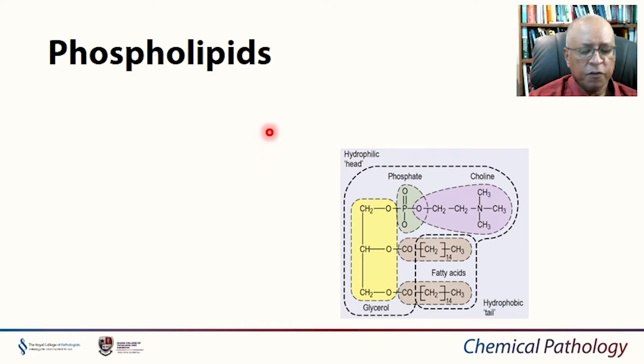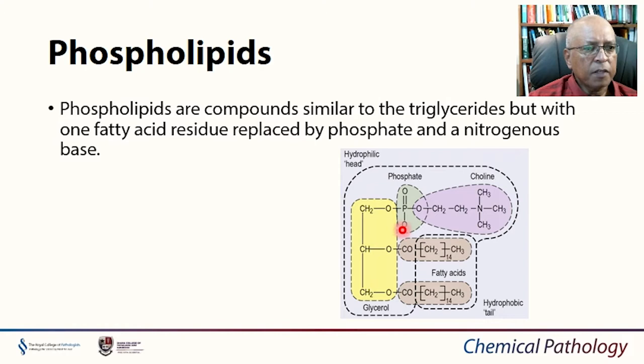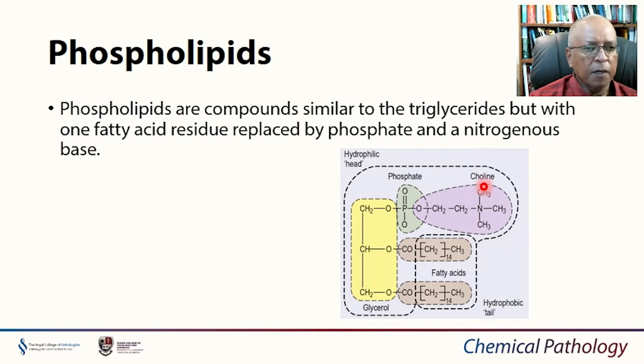Phospholipids are very similar to triglycerides. Looking at the structure, you can see the remnants of the triacylglyceride structure, but where one fatty acid residue has been replaced by a phosphate and a nitrogenous base — in this case, choline. So the structure is very similar to triglycerides except that one of the fatty acids has been replaced by a phosphate and a nitrogenous base.